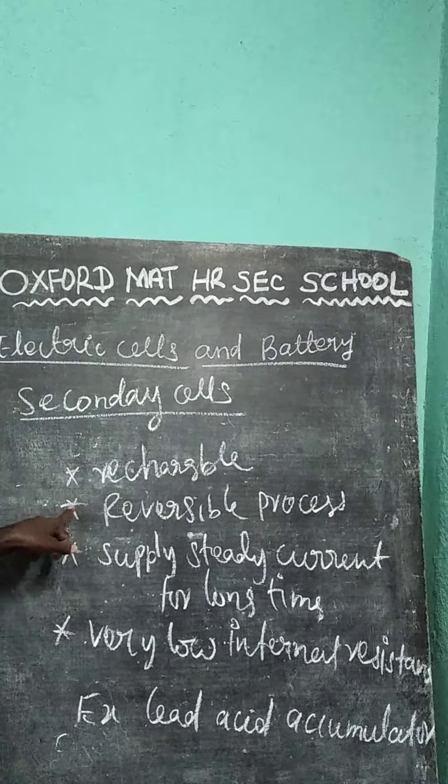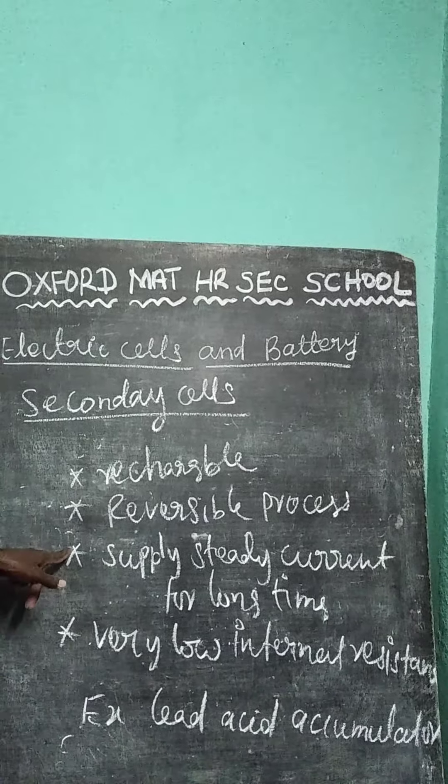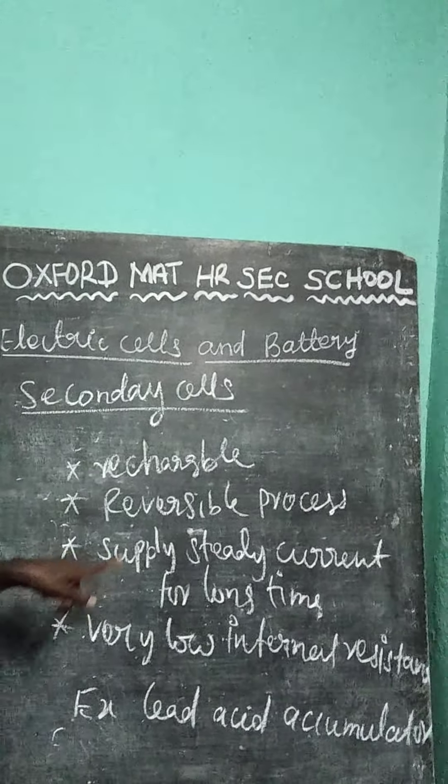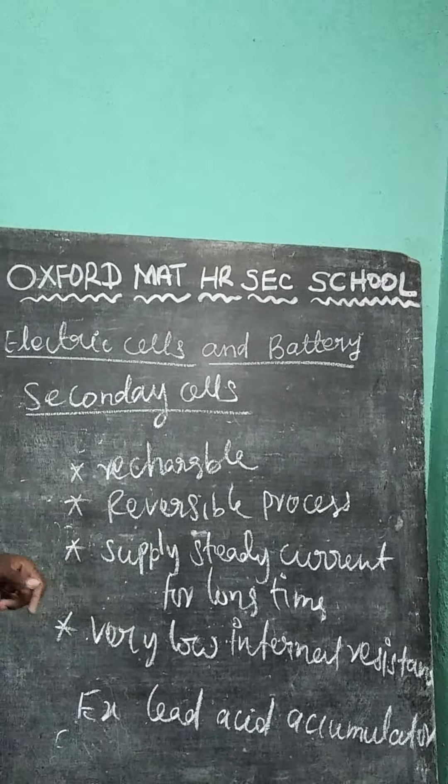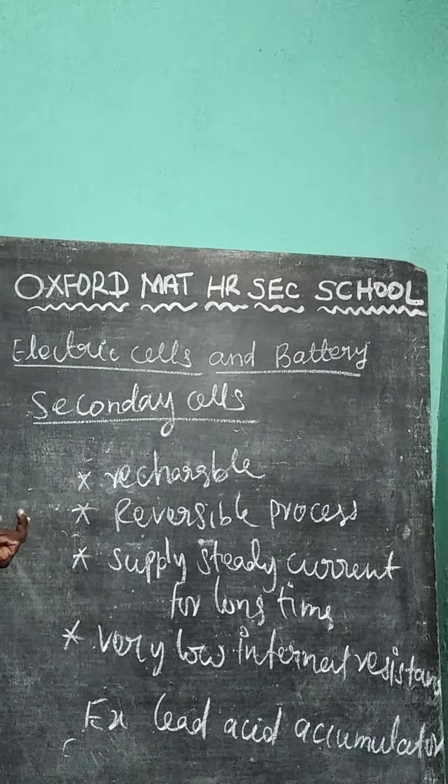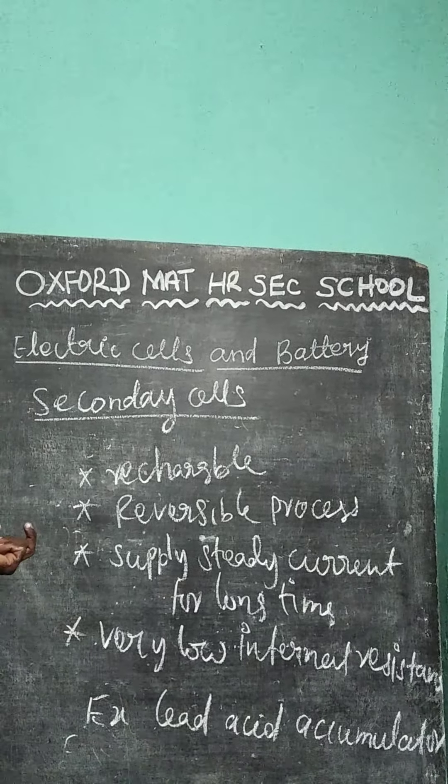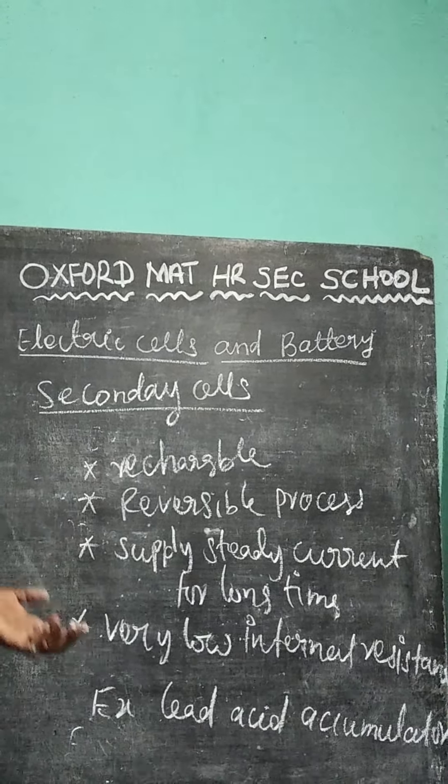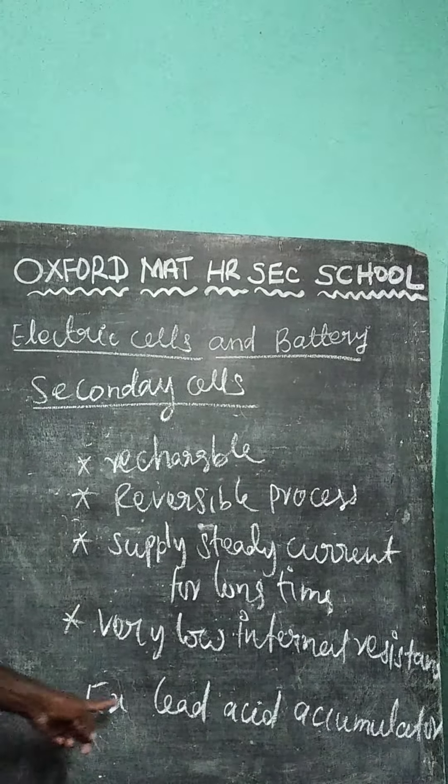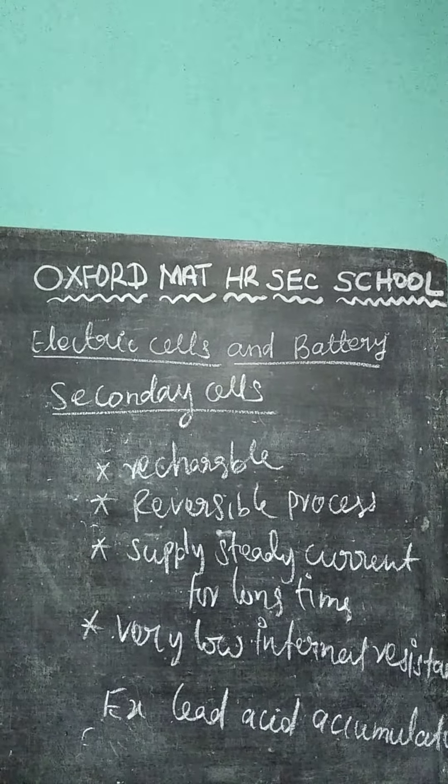It is a reversible process. Then, it can supply steady current for long time. It has very low internal resistance. The internal resistance opposes the current is very very low. It can allow the current very high amount. For example, lead accumulator. There is a secondary cell examples.